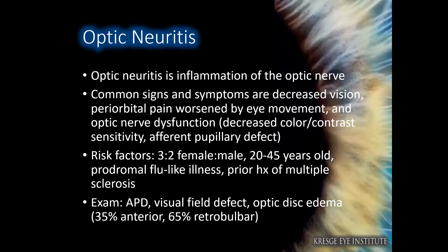The first optic neuropathy we will be discussing is optic neuritis, which is inflammation of the optic nerve. Common presenting signs and symptoms include decreased vision, periorbital pain worsened with eye movement, and optic nerve dysfunction.